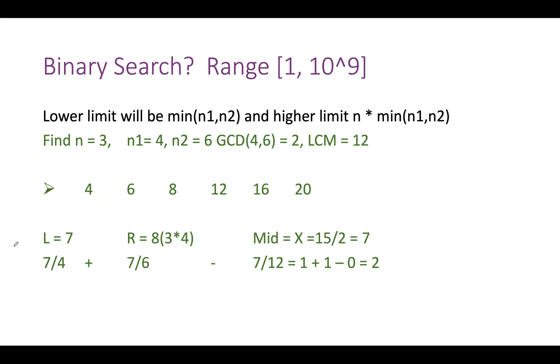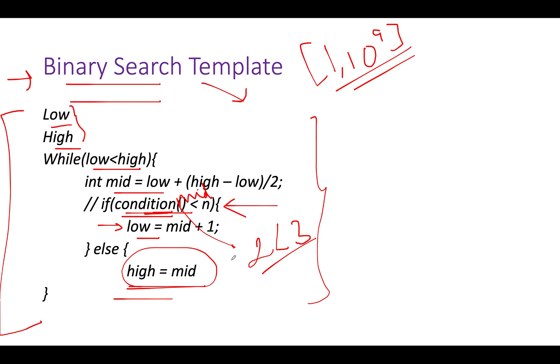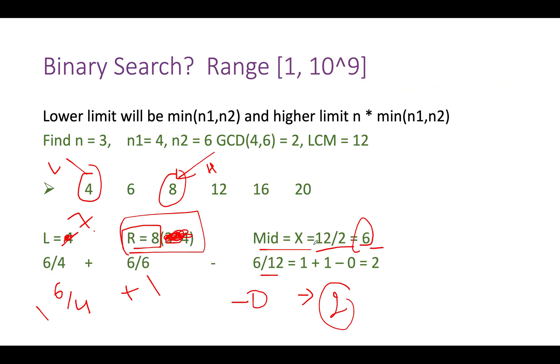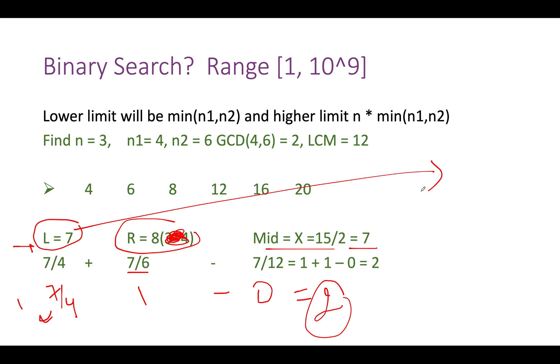Let's proceed for the third iteration. Low is 7, high is 8. Mid turns out to be 15 by 2, which is 7. Let's apply the formula: 7 by 4 gives us 1, 7 by 6 gives us 1, 7 by 12 gives us 0. The factor count remains 2. 2 is still less than 3, so we update low to mid plus 1, which is 8. Low is 8, high is 8. We've concluded the process and get our answer, which is 8.